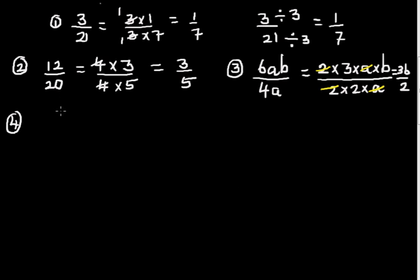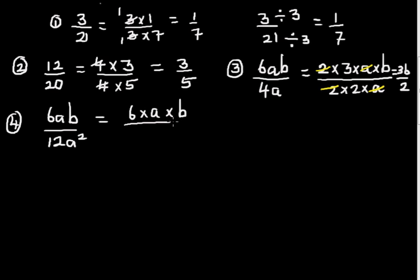Let's look at one more: 6ab divided by 12a squared. This is the same as 6 times a times b on top, and 6 times a times a on the bottom — since 12 equals 6 times 2, but writing it as 6 here. The 6s cancel and the a's cancel, so what remains is b over a.